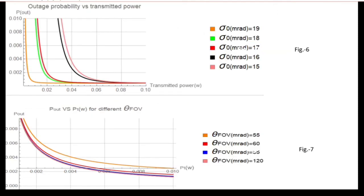Figure 6 is plotted to understand the impact of orientation deviation due to hovering fluctuation of the receiver. Performance degradation due to angle of arrival fluctuation can be improved by increasing the receiver field of view. However, as we increase the receiver field of view, background noise also increases, which adversely affects system performance.